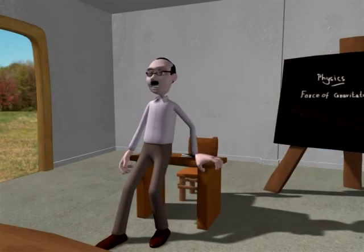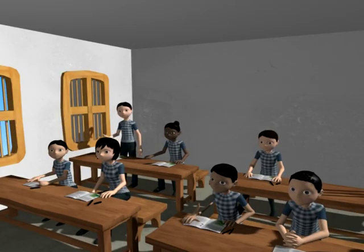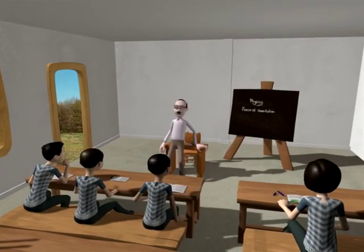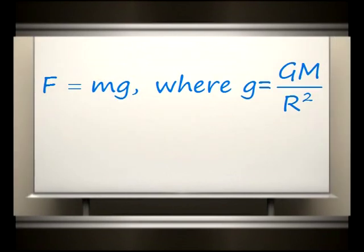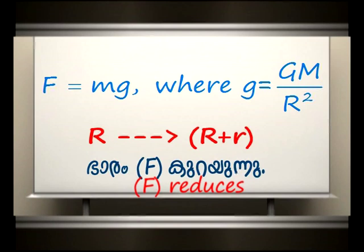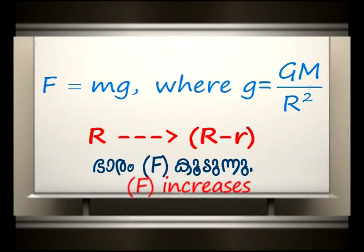The earth is not a perfect sphere — the distance from the center of the earth to the poles and to the equatorial region are not equal. Therefore, the gravitational force on a body is maximum at the polar region and minimum at the equator. Looking at the equation F = mg, where g = GM/R²: the value of g changes with R. At the equatorial region, R increases so weight decreases; at the polar region, R decreases so weight increases.